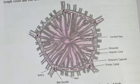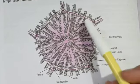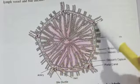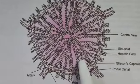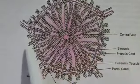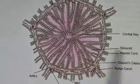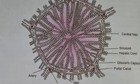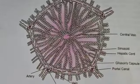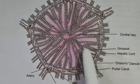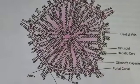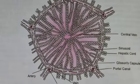If we cut the liver in cross-section (anatomy), we can see structures called hepatic lobules. These hepatic lobules are the structural and functional unit of the liver.